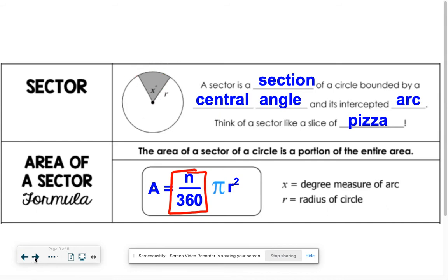That's what you plug in for n. So whatever this angle measure is goes right in here for n, over 360, times the whole area of pi r squared. This part right here gives you the part. This is the area of the whole circle.